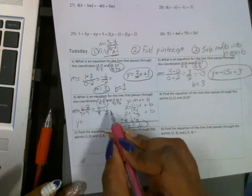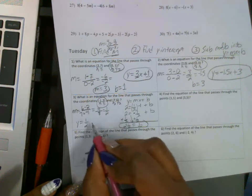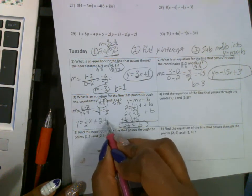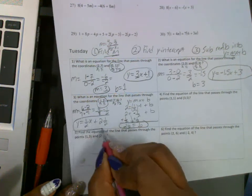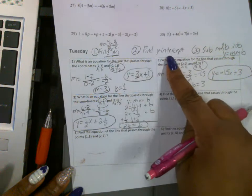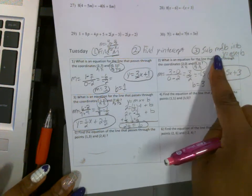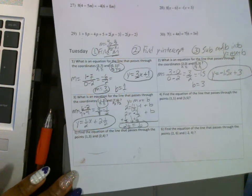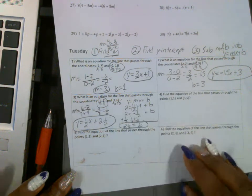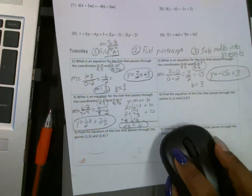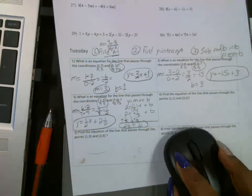So we get y equals the slope, which is a half, times x, plus 2 and a half. You find m, you find b, you substitute your m and b into slope intercept form. So you're going to do that for the other ones, because I did half of it for you. If you still have questions, please don't hesitate to ask. Thank you.